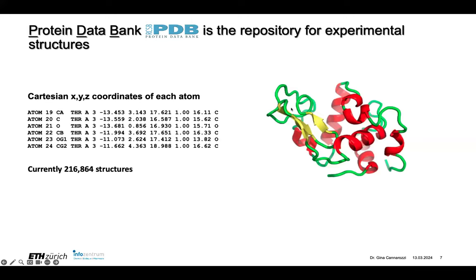When you have the protein structure in the PDB, it's stored like this — the XYZ coordinates of each atom. So here you have atom 19, it's an alpha carbon, it's part of a threonine, and this is the XYZ coordinate along with some additional information.